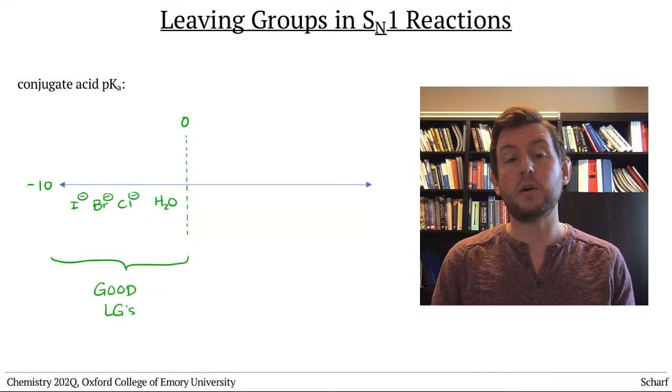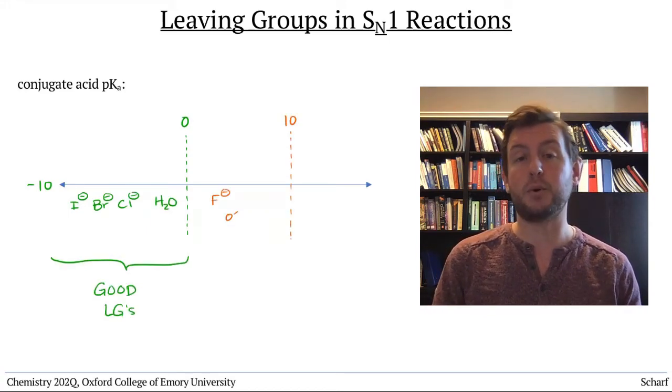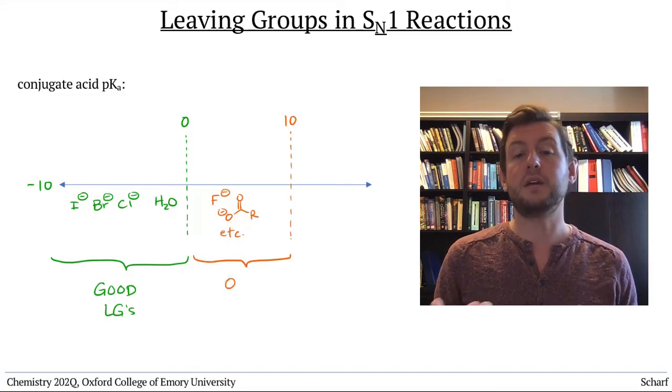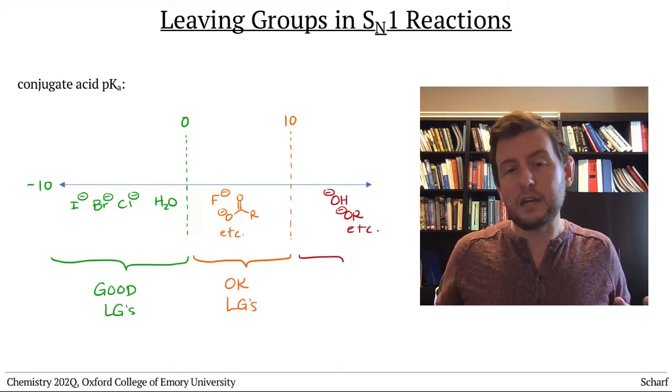Although once in a while, SN1 reactions can occur for slightly poorer leaving groups as well. Those with conjugate acid pKa's up to about 10 or so.